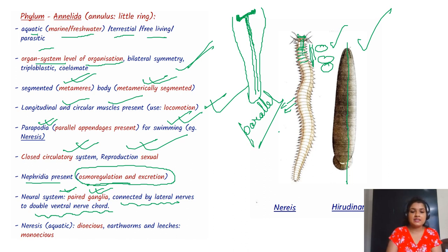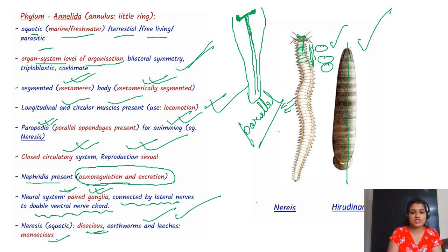Examples are Nereis, which is dioecious, and earthworm and leeches, which are monoecious.